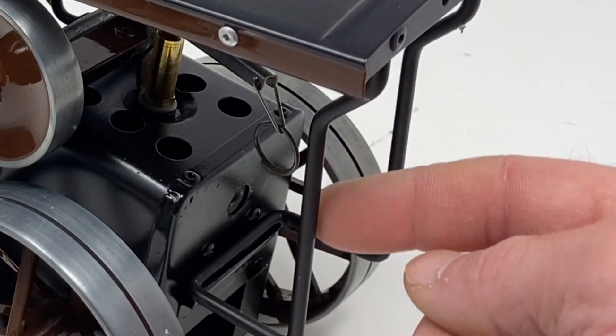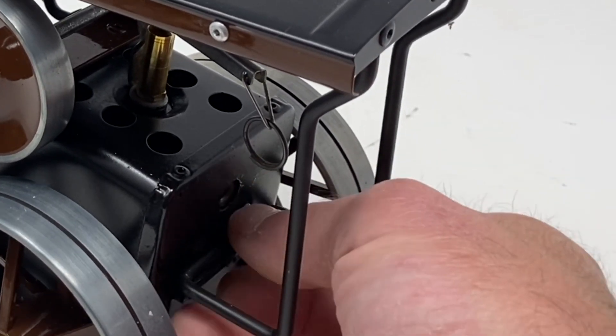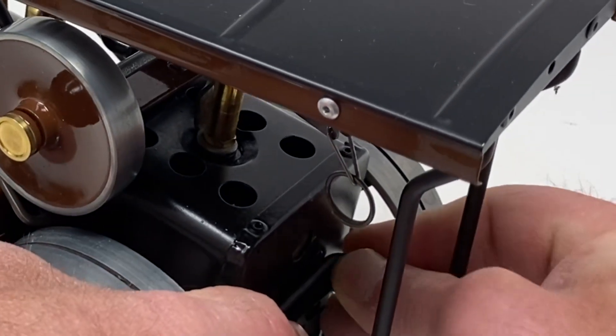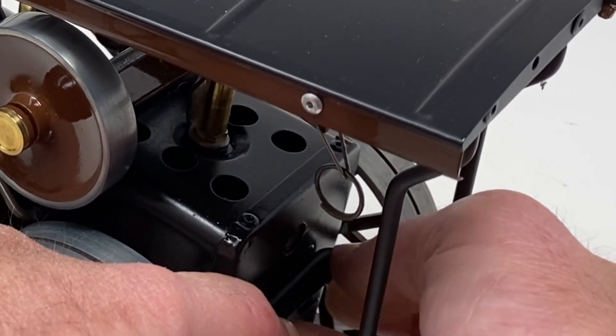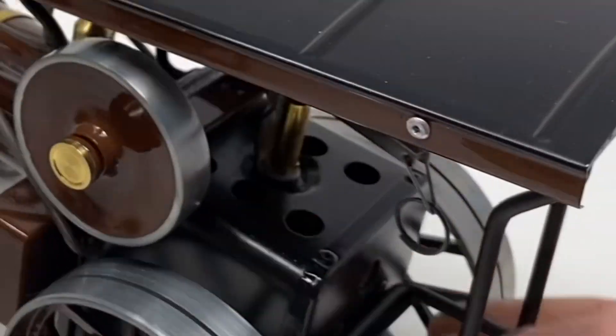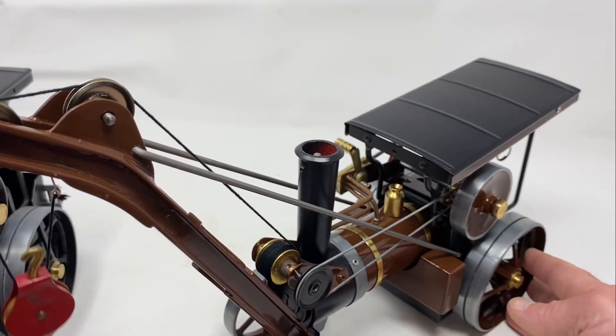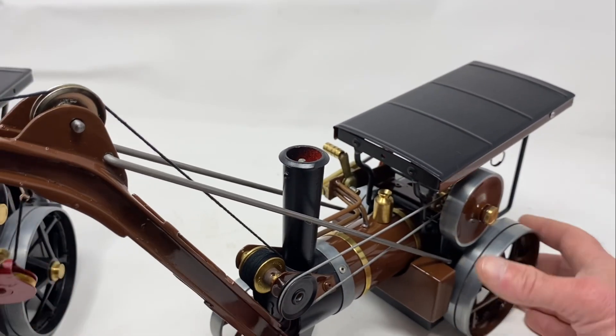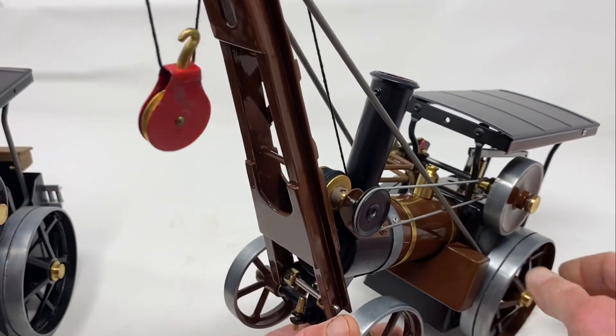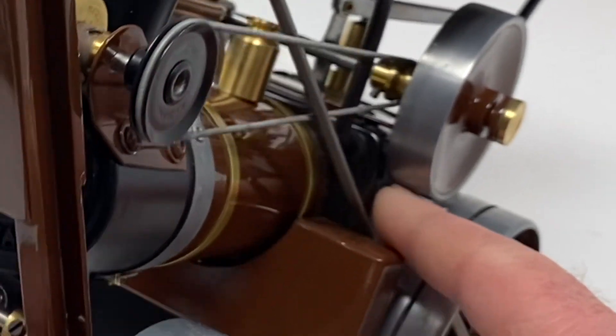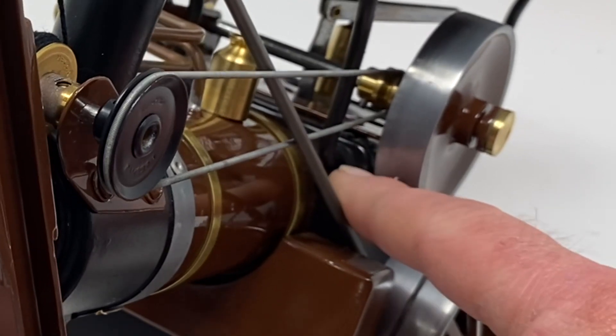See that hoop there? I cut that off, shortened it, and then I re-bent it at a 90 degree angle on the bottom so then it'll go into two holes that are drilled in the front of the smoke box.